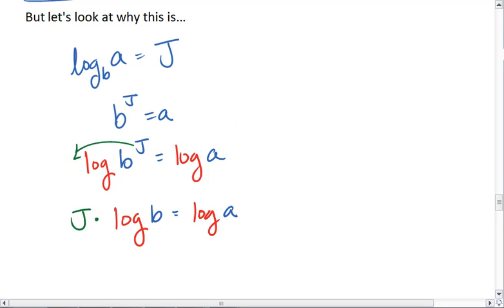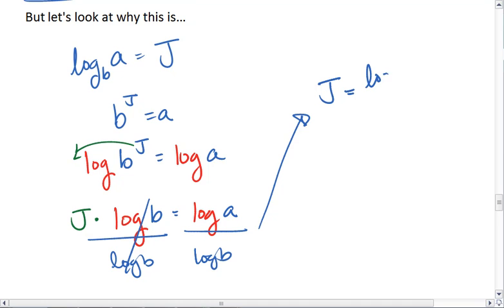I want to divide both sides by log base 10 of b, which leaves me with j equals the log of a over log of b. Thus, log base b of a equals log base 10 of a over log base 10 of b.